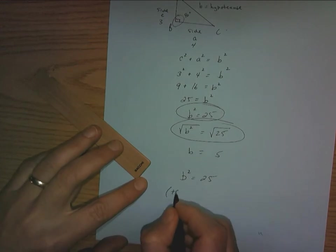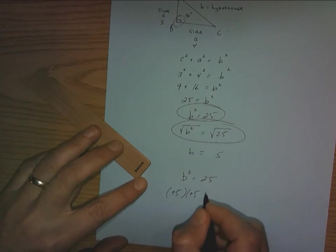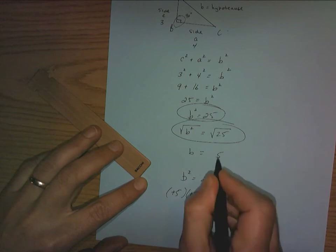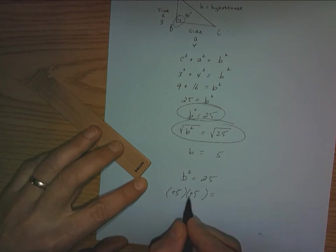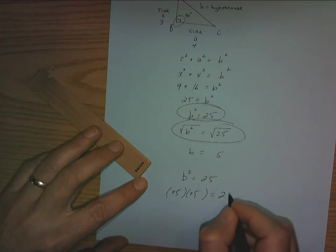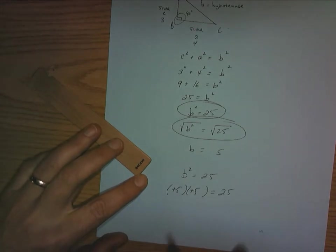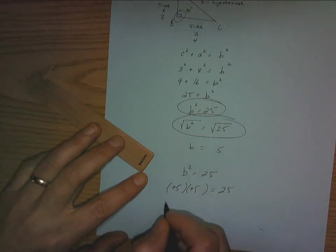Well, certainly we found one of the numbers. It's positive 5. That's what we refer to 5 as as being positive 5. So positive times positive is positive. 5 times 5 is 25. However, there is another mathematical answer that would work.